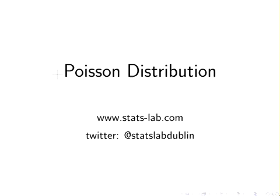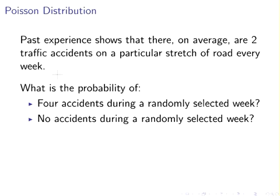In this presentation we're going to look at the Poisson distribution and an example. Past experience shows that on average there are two traffic accidents on a particular stretch of road every week. What is the probability of four accidents during a randomly selected week and zero accidents on a randomly selected week?